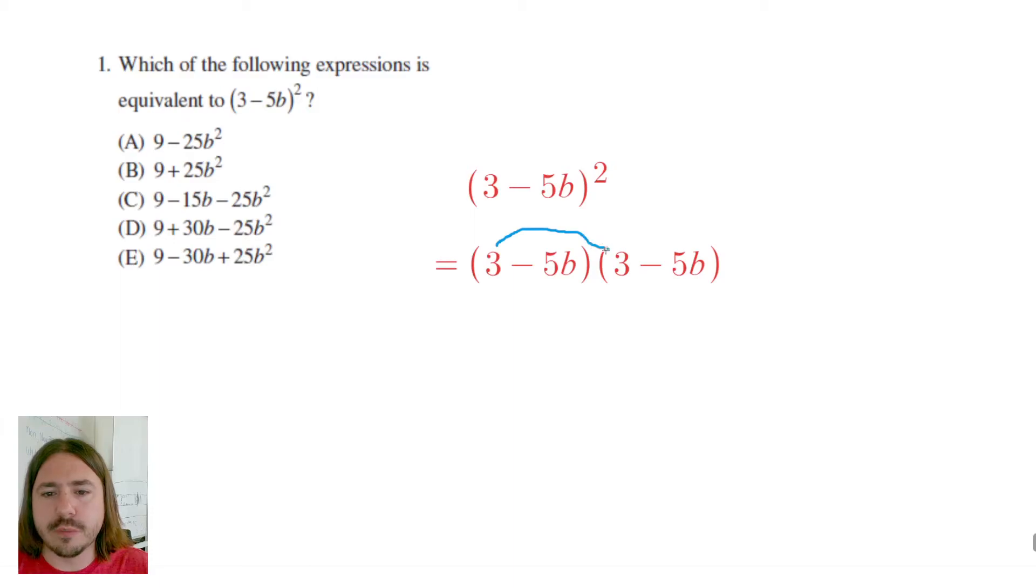For example, we need to multiply 3 times 3. We also need to multiply 3 by negative 5b. We need to multiply negative 5b by 3 again, and then finally negative 5b times negative 5b. So we'll multiply each of these four products one by one here.